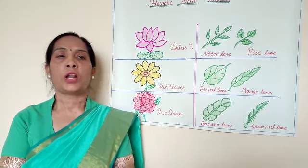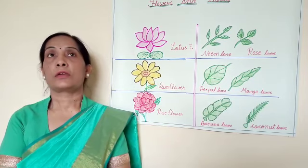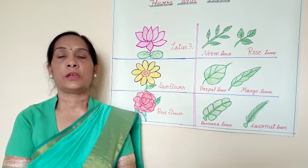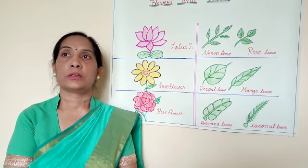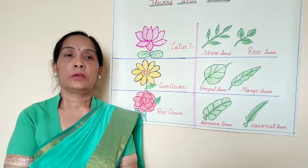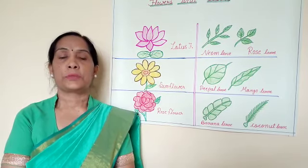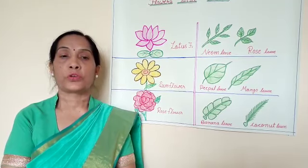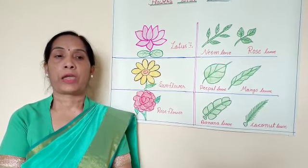Some leaves are big and some are small. Small leaves, like tulsi and mint. Big leaves, like lotus and papaya.